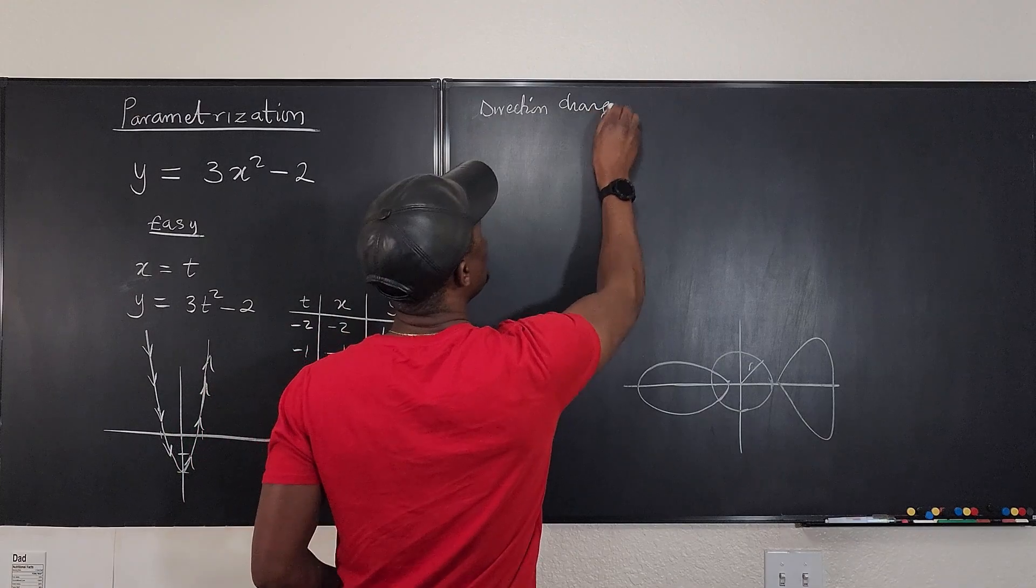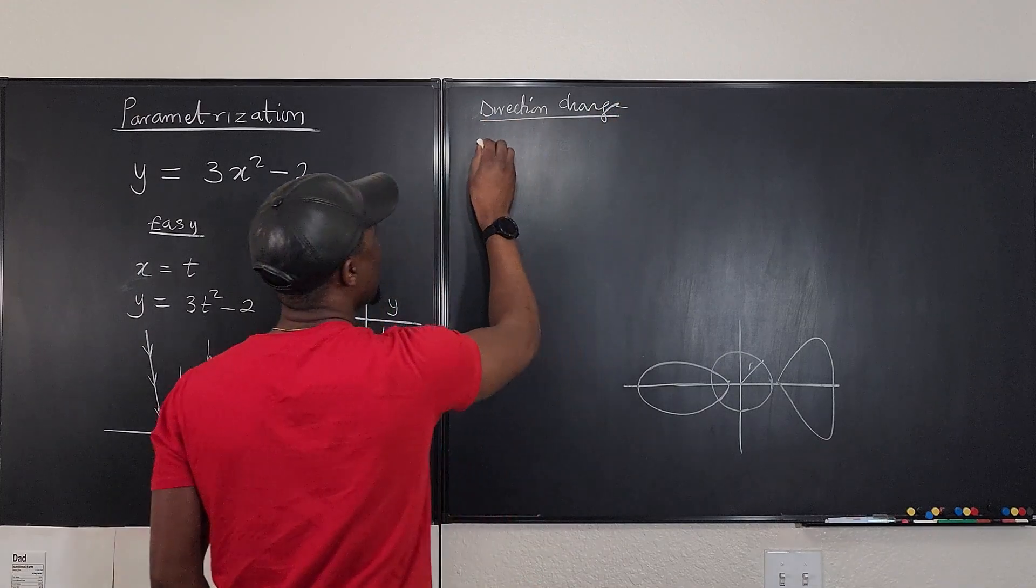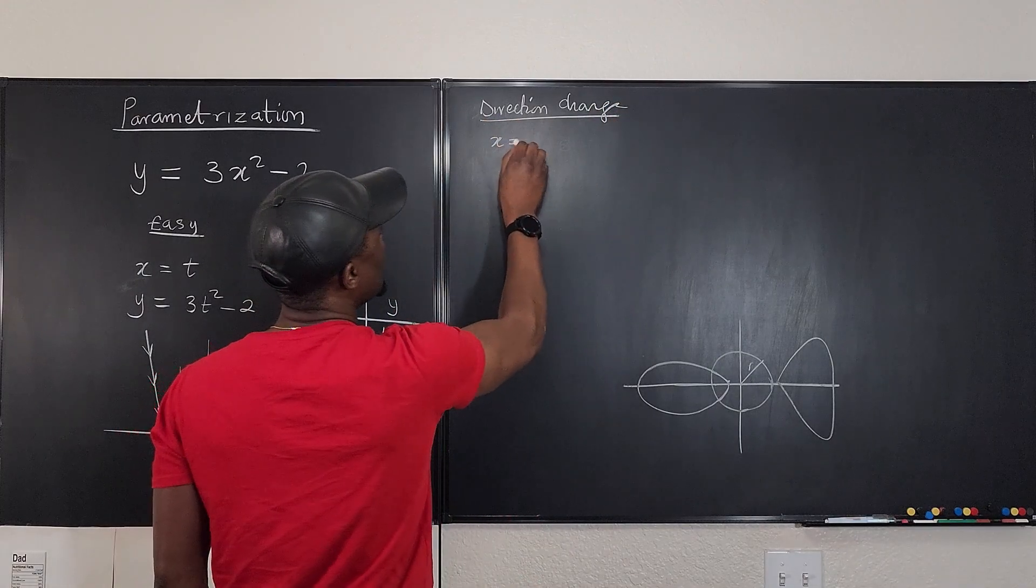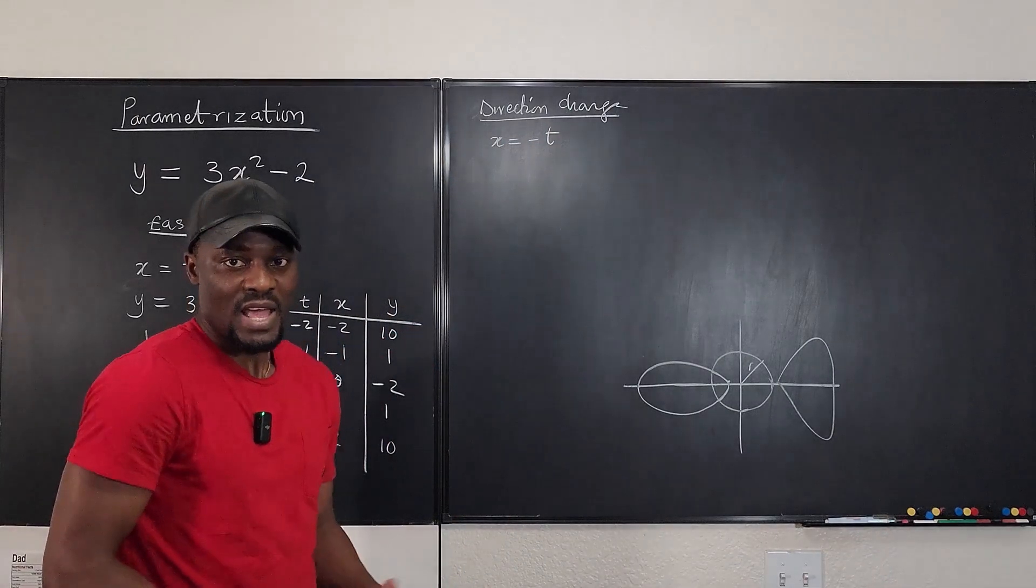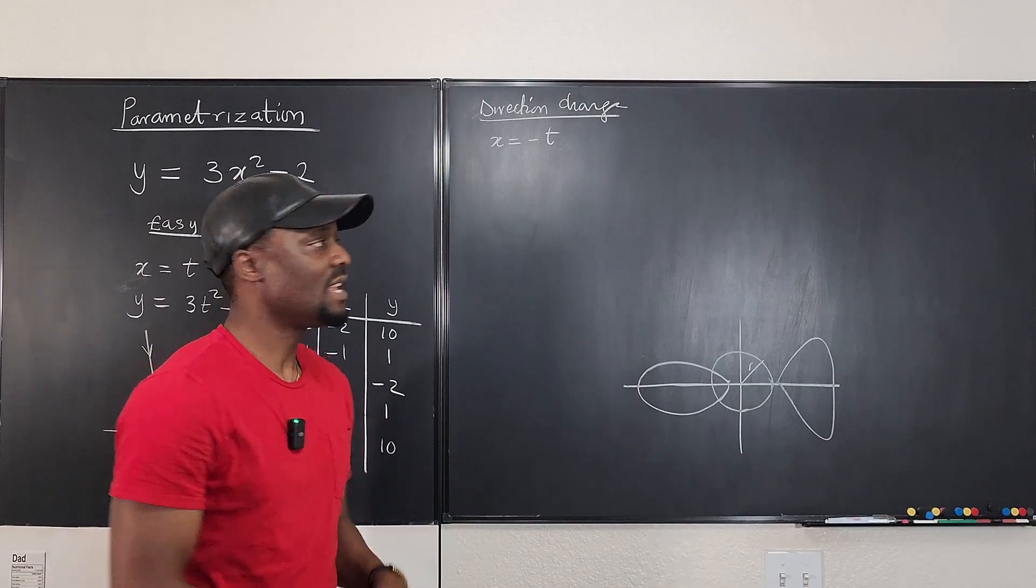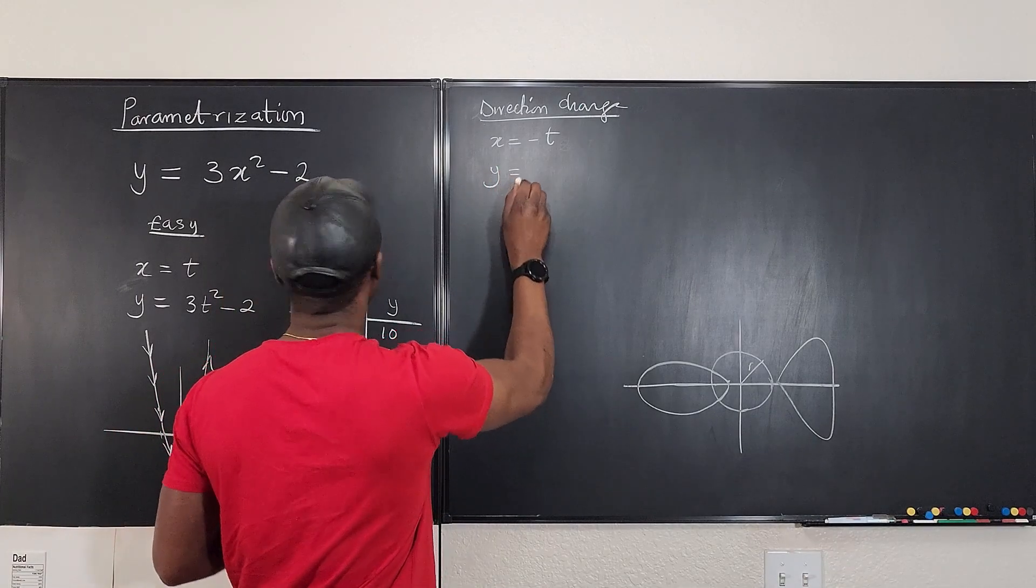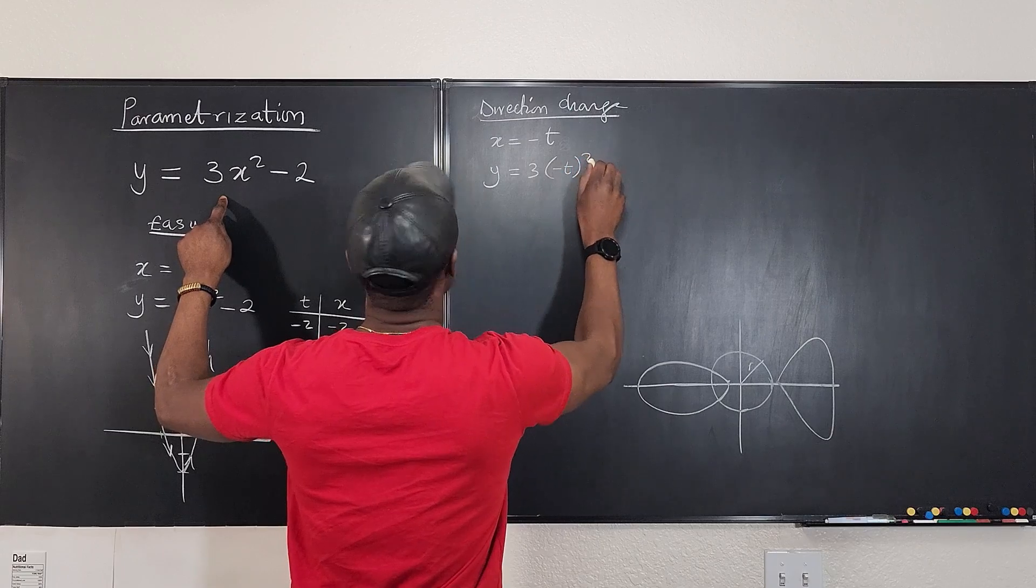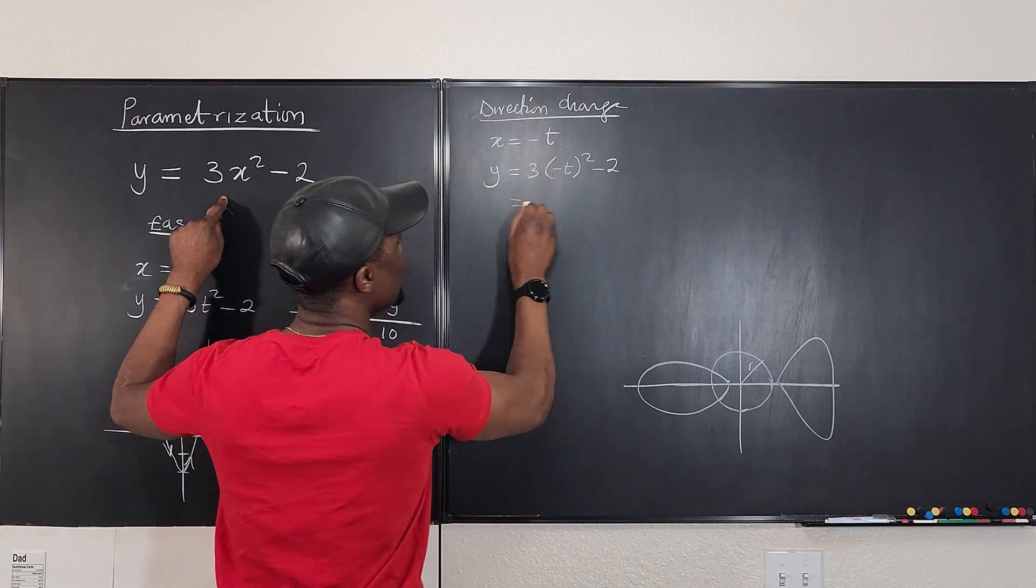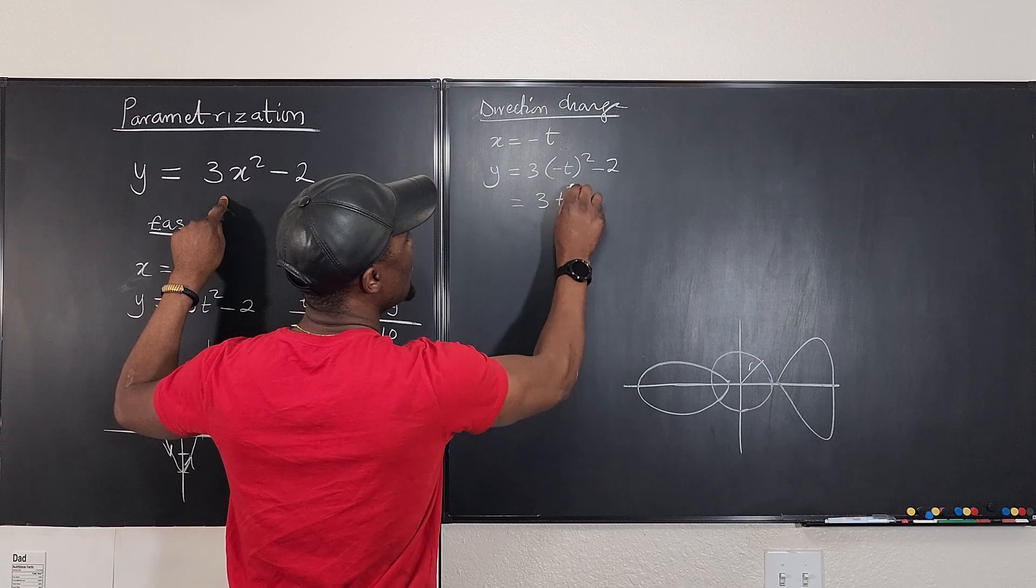But mode 2. So if you want to change the direction, all you have to say is that x is equal to negative t. Just say x equals negative t. And then what will y be? Y will be equal to 3 times negative t squared minus 2, which gives you 3 times t squared minus 2.